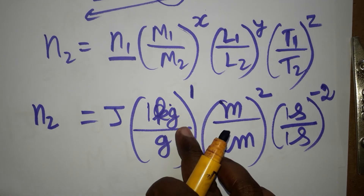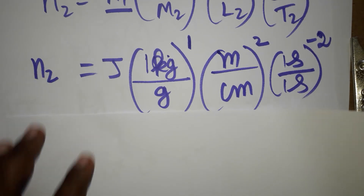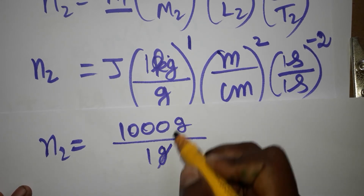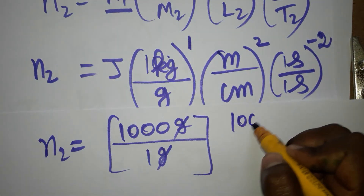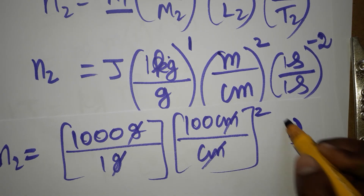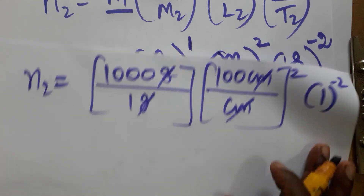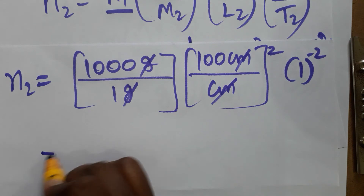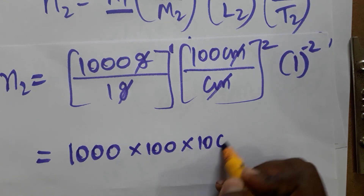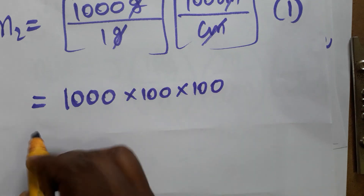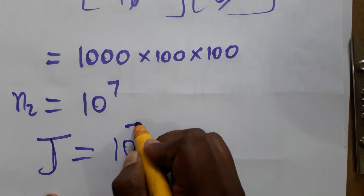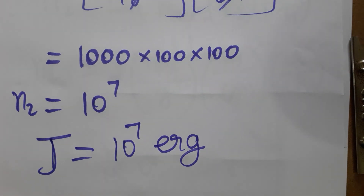Now converting to the same units: 1 kg = 1000 grams, so (kg/gram) = 1000/1; gram cancels. 1 meter = 100 centimeters, so (meter/centimeter) = 100/1; centimeters cancel. Seconds cancel, giving 1^(−2) = 1. So n2 = 1000^1 × 100^2 = 1000 × 10000 = 10^7. Therefore, one Joule is equal to 10⁷ ERG. Thank you for watching — please subscribe!